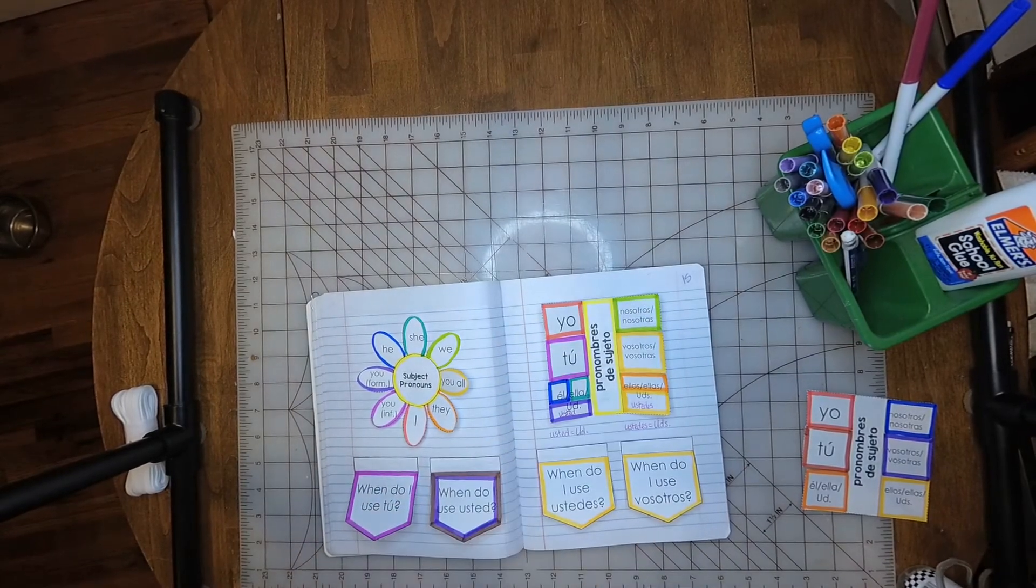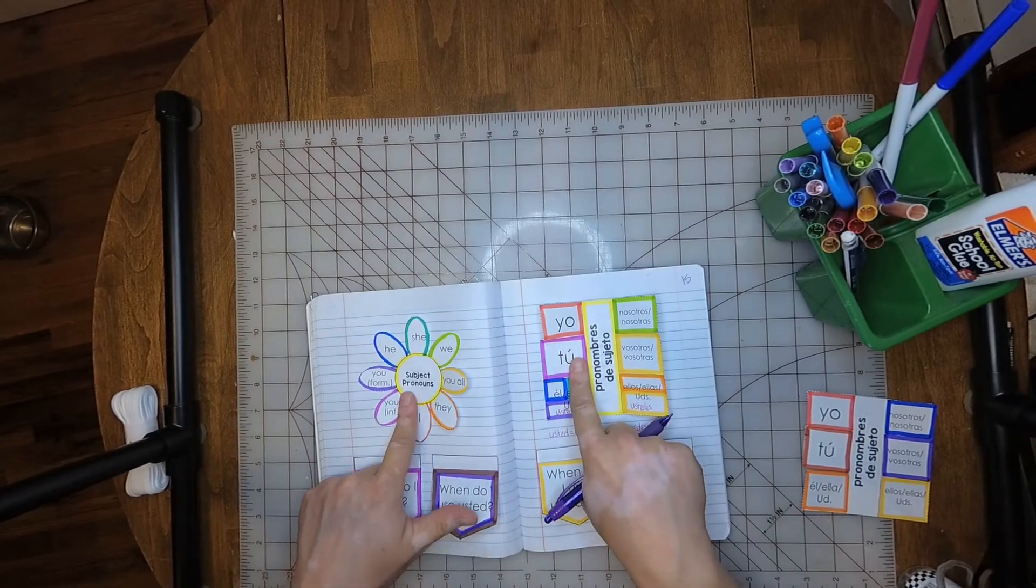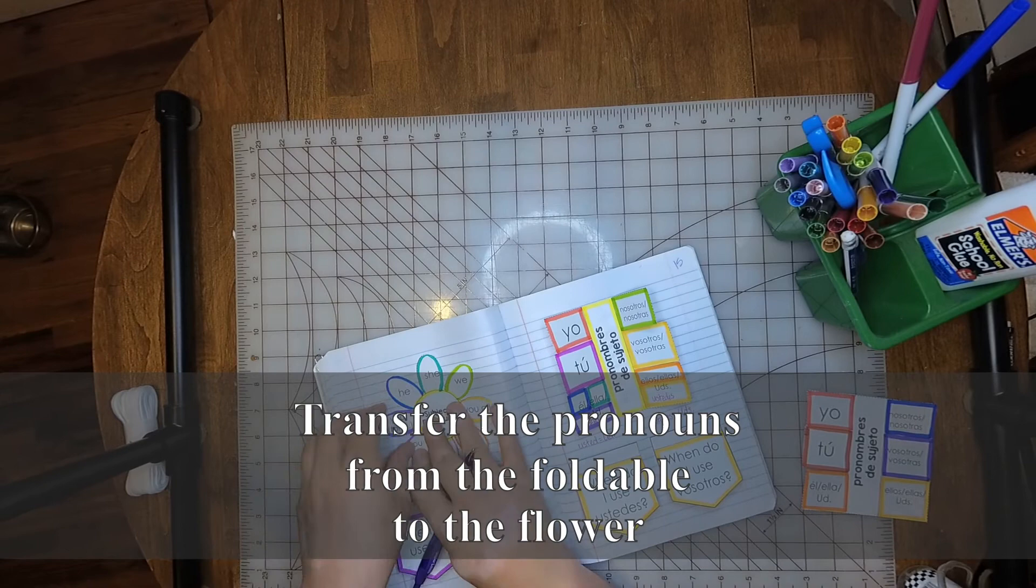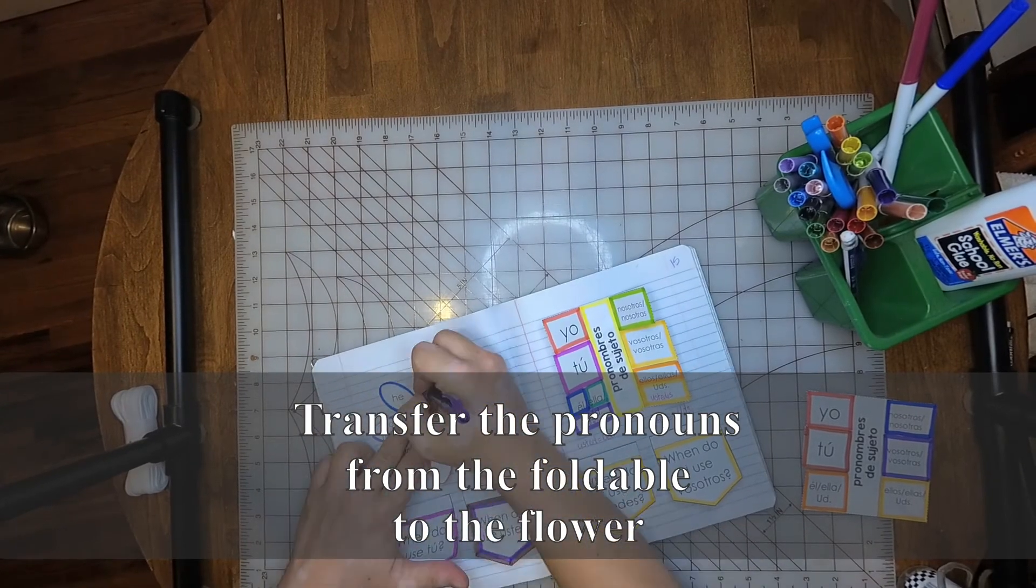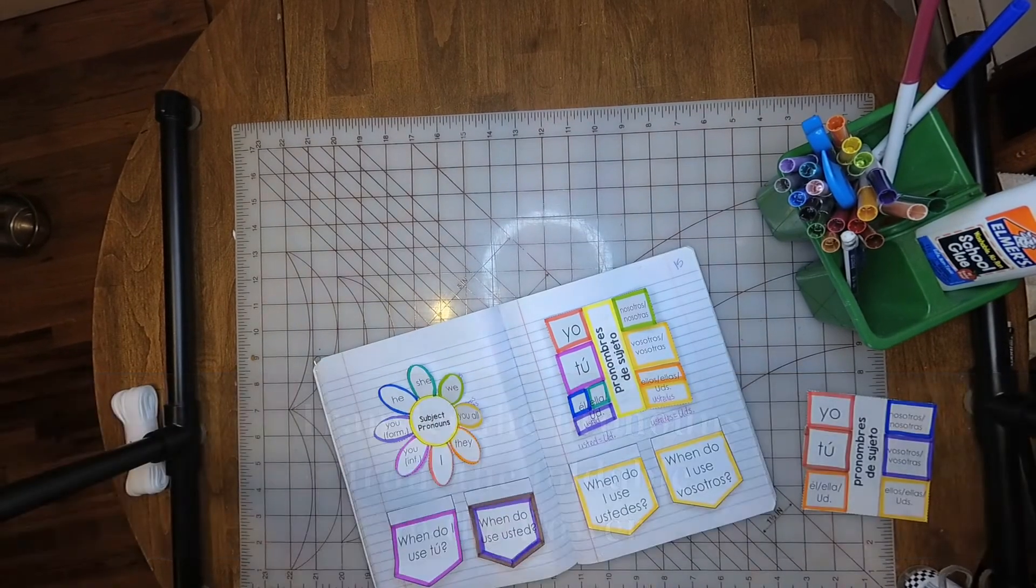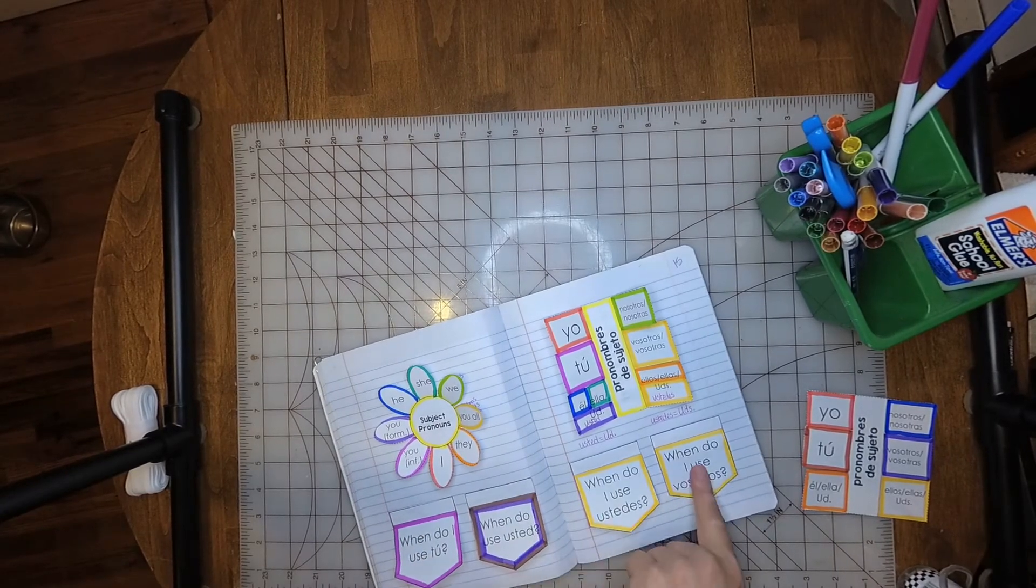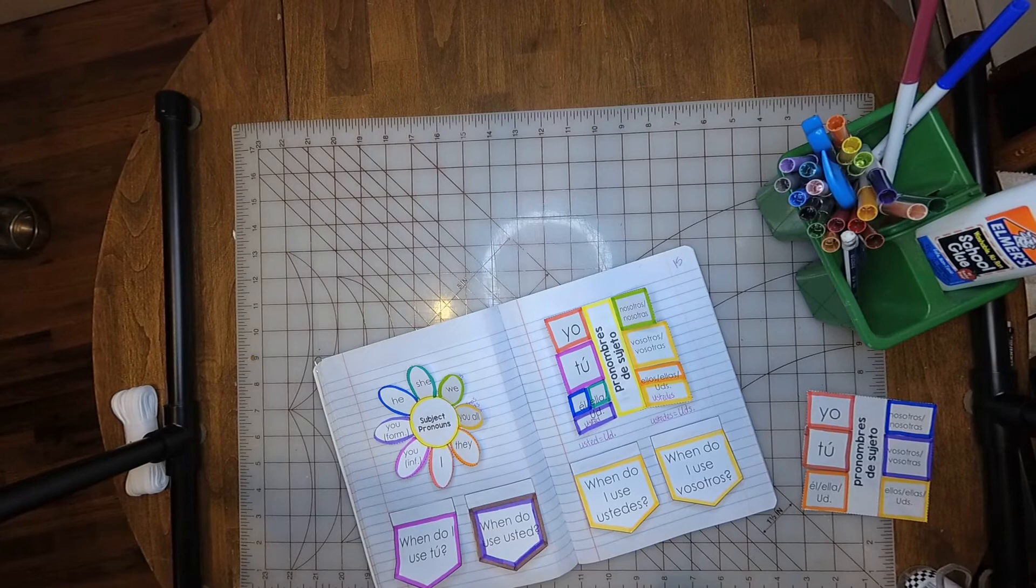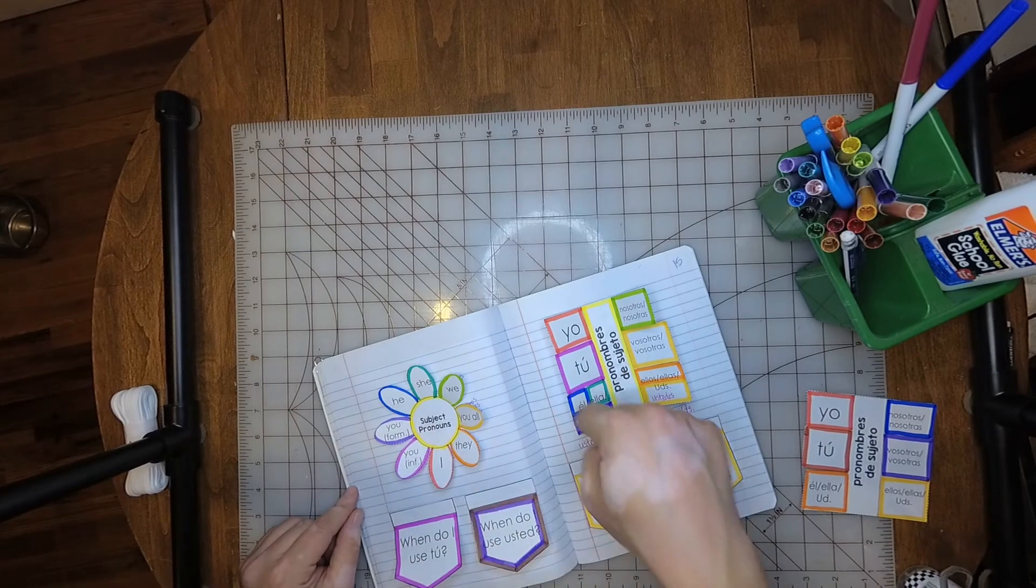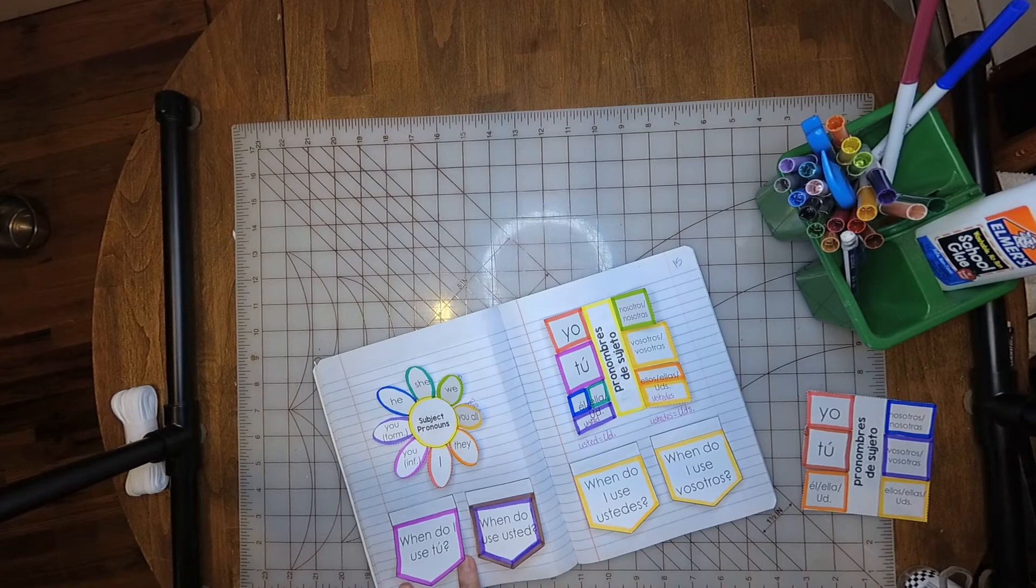Now, I'm going to transfer all of the information here to the flower. Now, under each one of these flaps, we're then going to write the rules for when we use each one. I color-coded them to match with these. We're going to write the rules under each one.